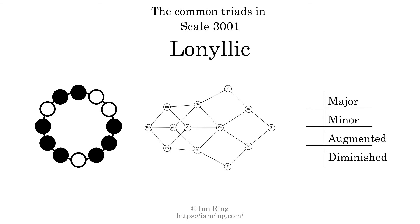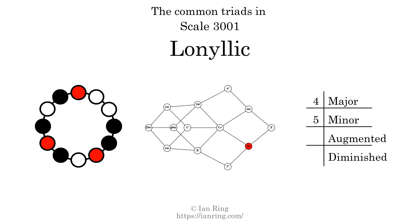Here are the common triads present in this scale. The diagram in the center is a graph of parsimonious voice leading between triads. There are 4 major triads, 5 minor triads, 2 augmented triads, and 2 diminished triads.